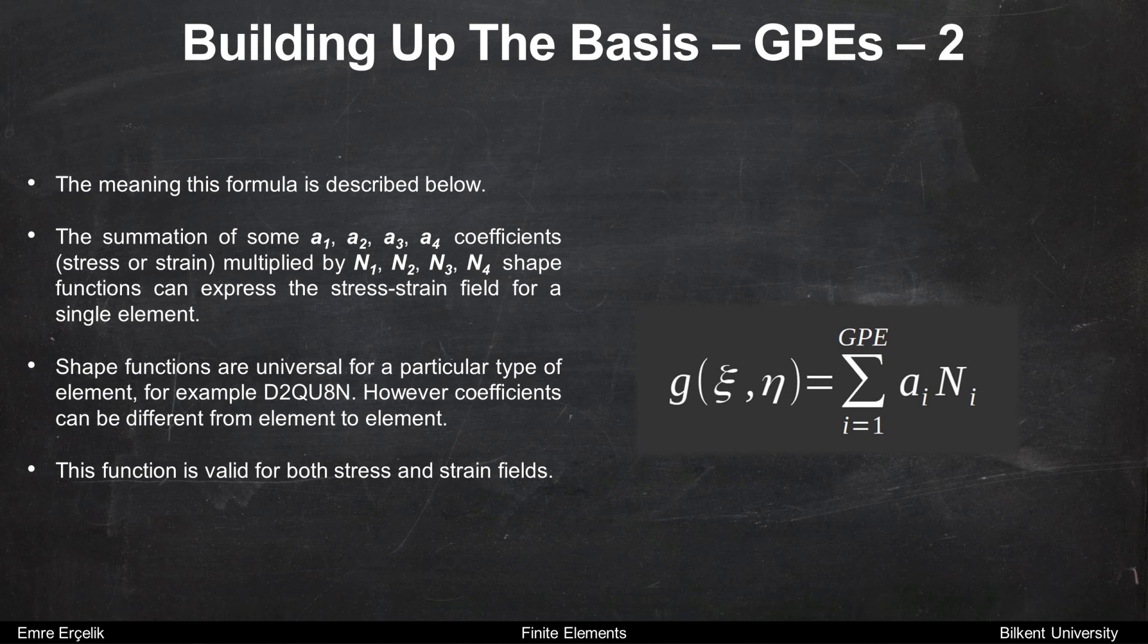Shape functions are universal for a particular type of element, for example D2Q4N. However, coefficients can be different from element to element. This approximation technique for an element can represent stress or strain field.